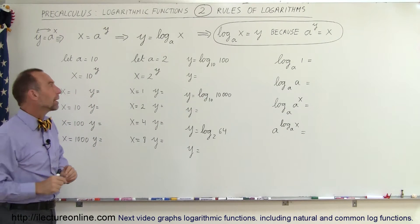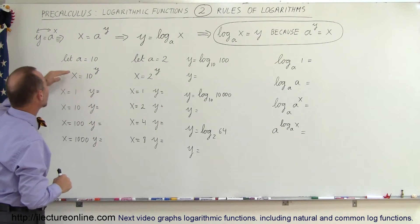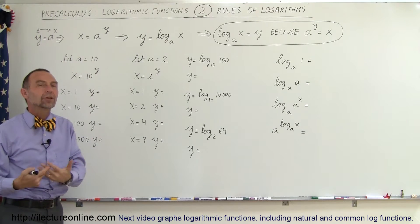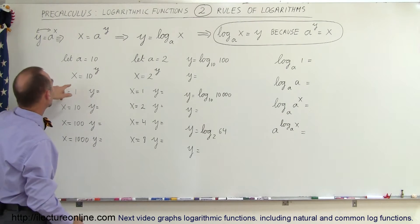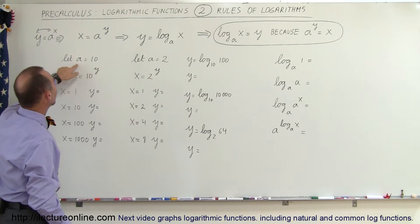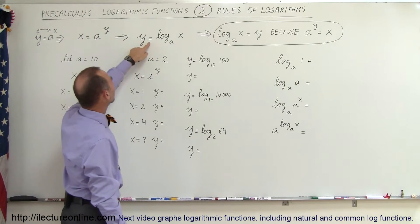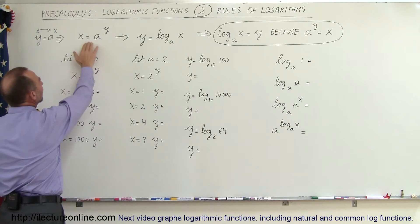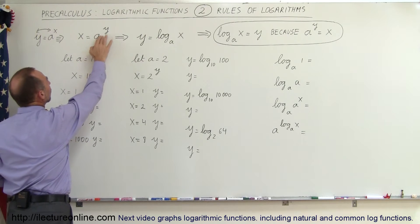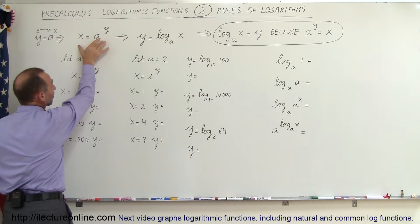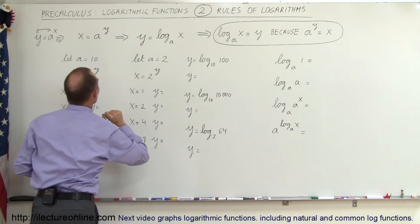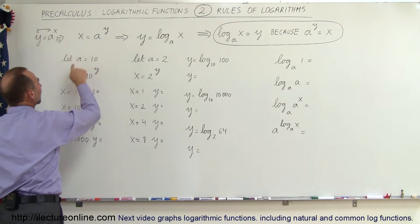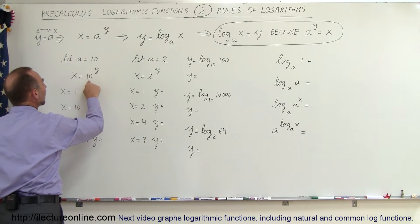To understand this a bit better, let's say the base is equal to 10, which is the common logarithmic function. If the base equals 10, then y equals log base 10 of x. Going back where we have x equals a to the y power — another way of writing the logarithmic function — we place 10 instead of a, so we have x equals 10 to the y.